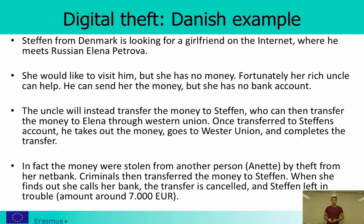There is a good Danish example of digital theft which was in the news a couple of years ago. Stefan from Denmark is looking for a girlfriend on the internet and meets a Russian woman, Eliana Petrova. They exchange a lot of emails, are very much in love, and at some point she would like to come visit him. But she has no money. Fortunately she has a rich uncle who can send her money, but she has no bank account, so the uncle will transfer the money to Stefan, who can then transfer the money to Elena through Western Union — an untraceable transfer.